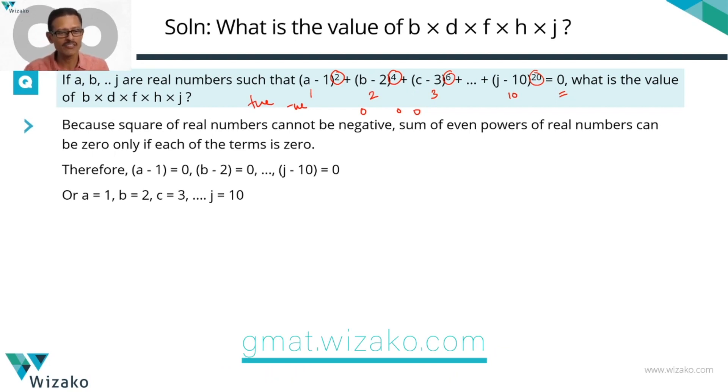Now that we have this, finding the value for this expression is child's play. We need to find the product of b, d, f, h, and j. b is the second number from the left, this is the fourth one, sixth, eighth, and tenth.